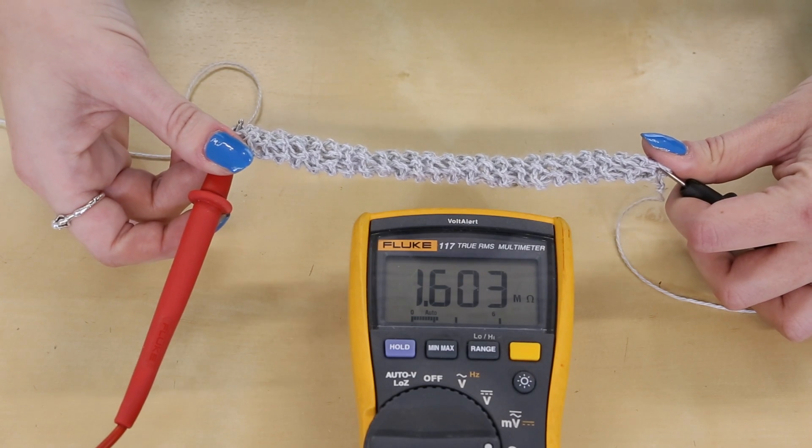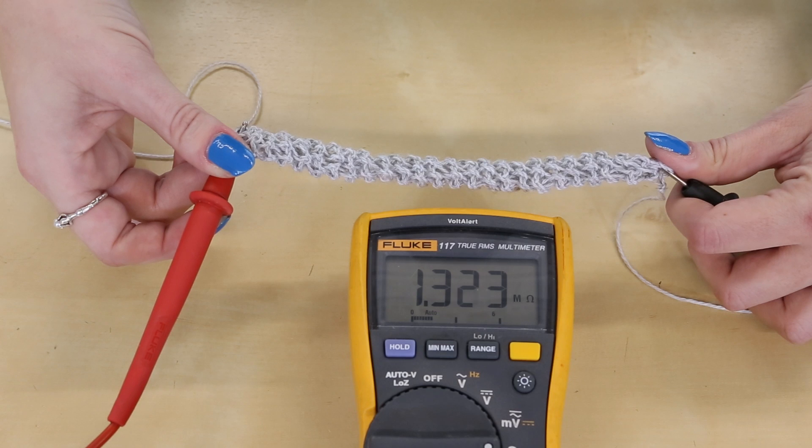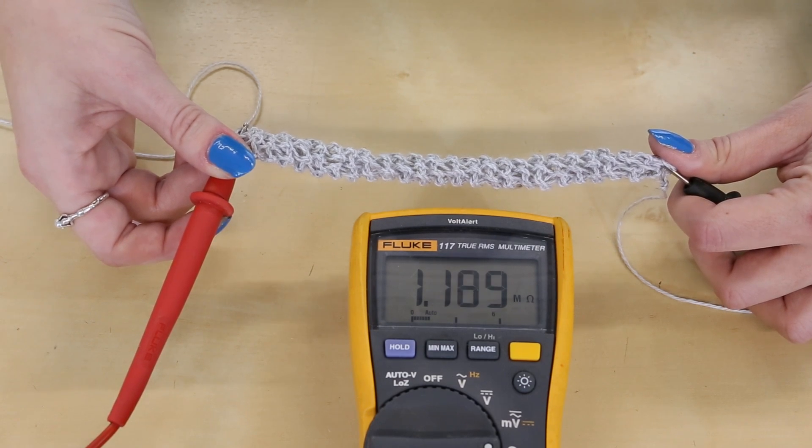We crocheted a tube of conductive yarn several inches long. You can also use a circular knitting machine for this. You can see that the resistance is high when the tube is held loosely, because the stainless steel fibers in the yarn aren't in much contact.